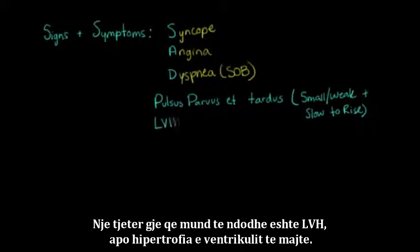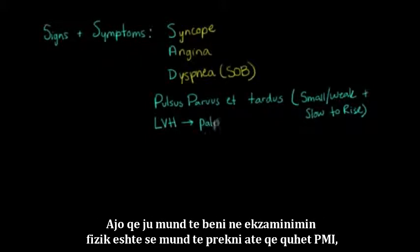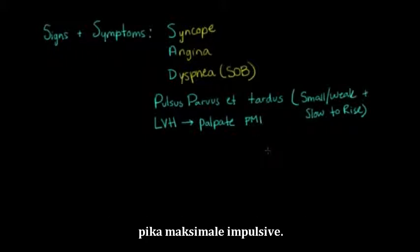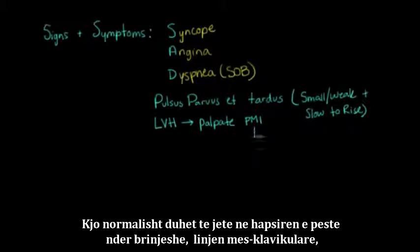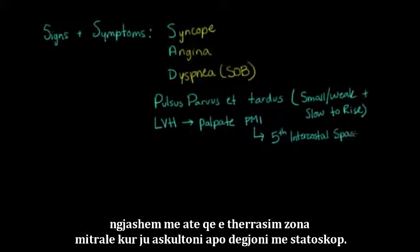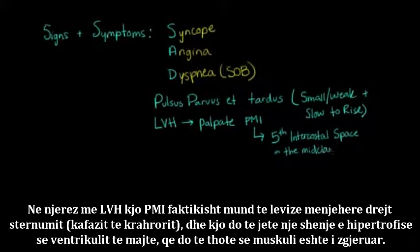Another thing that may occur is LVH, or left ventricular hypertrophy. On physical exam, you can palpate what's called the PMI, or point of maximal impulse. This should normally be in the fifth intercostal space in the midclavicular line — similar to what we call the mitral area when auscultating with a stethoscope. In people with LVH, this PMI can actually move medially, or towards the sternum, which is a sign that the muscle has gotten thicker.